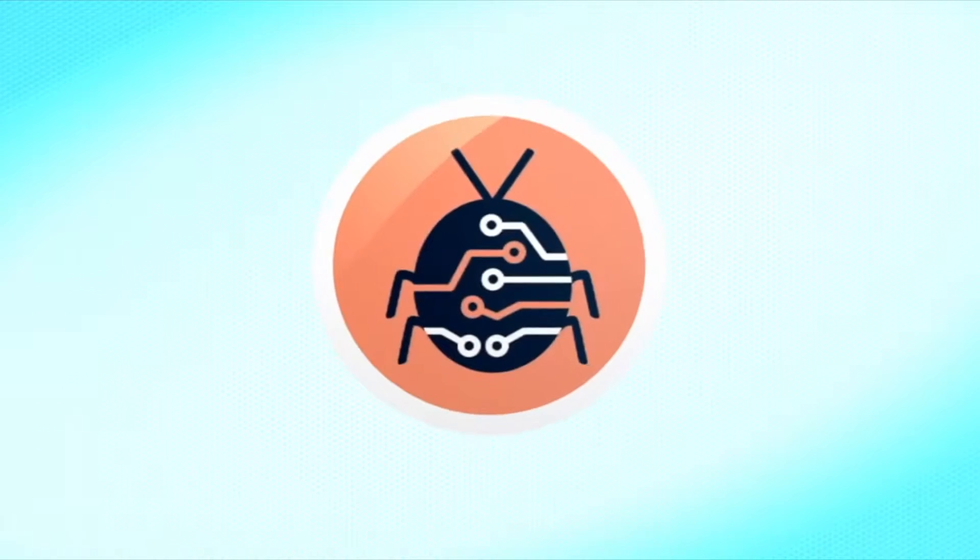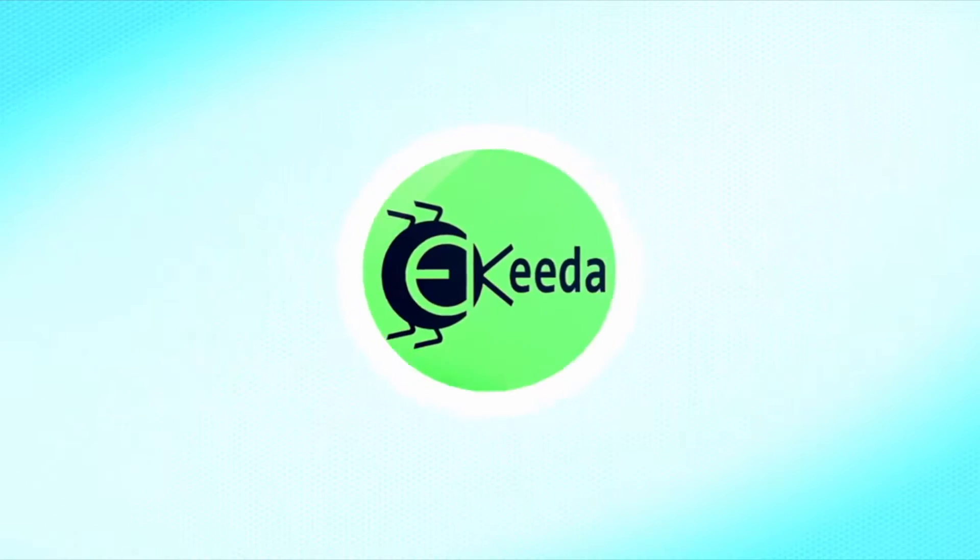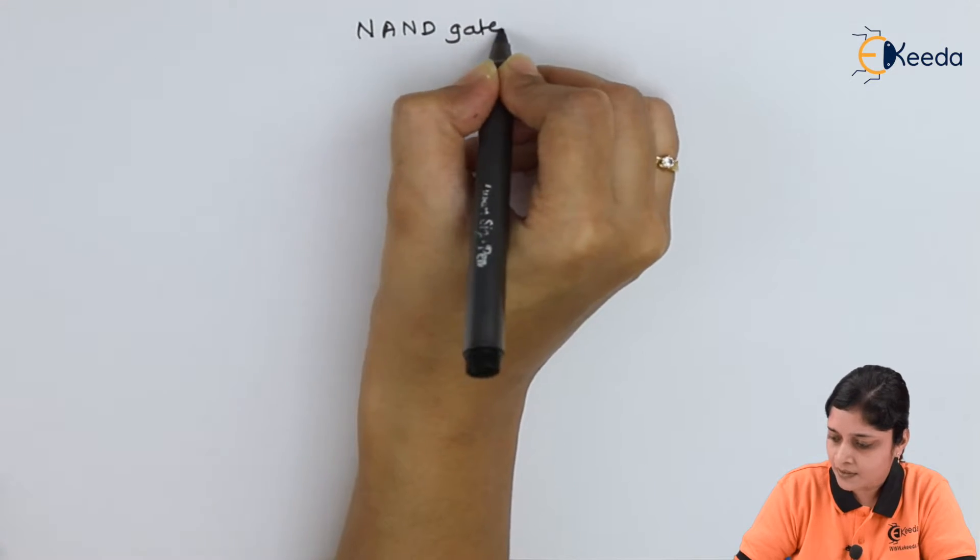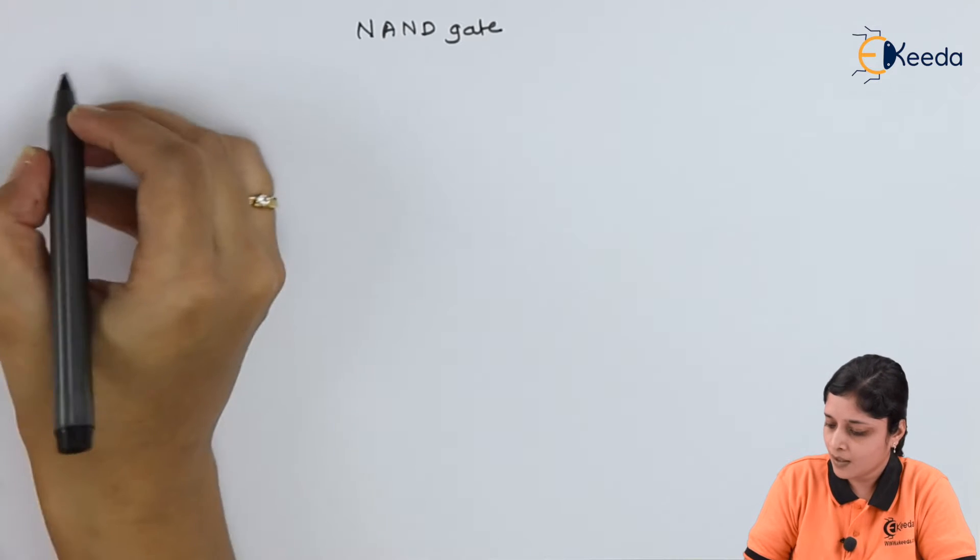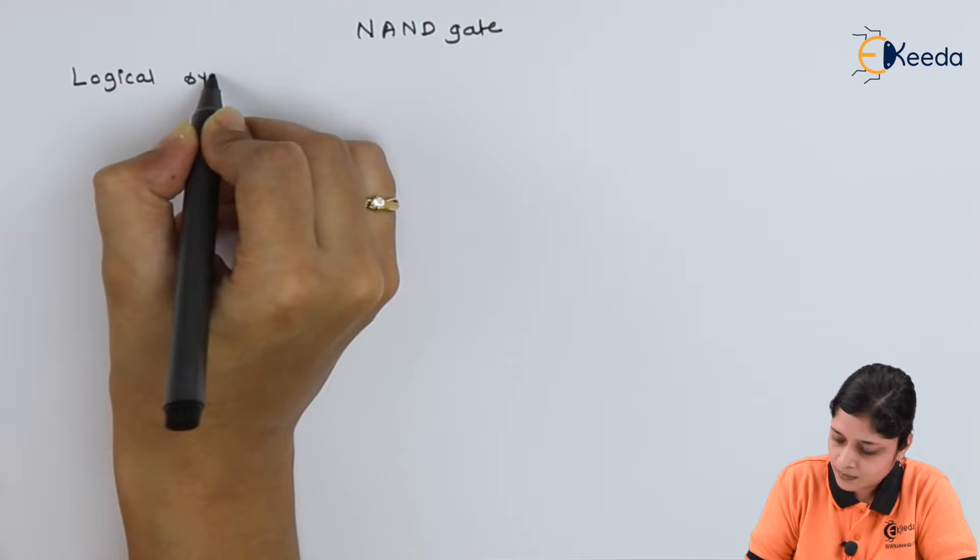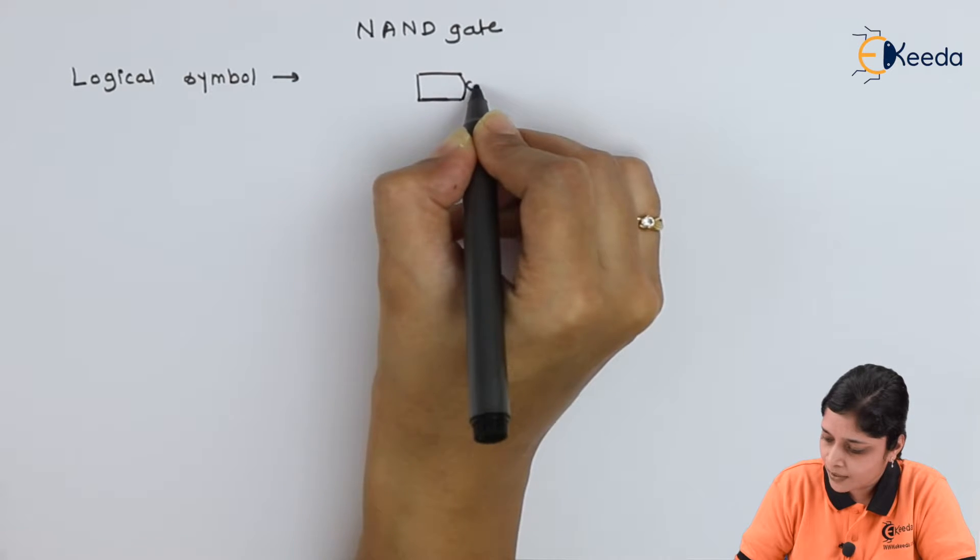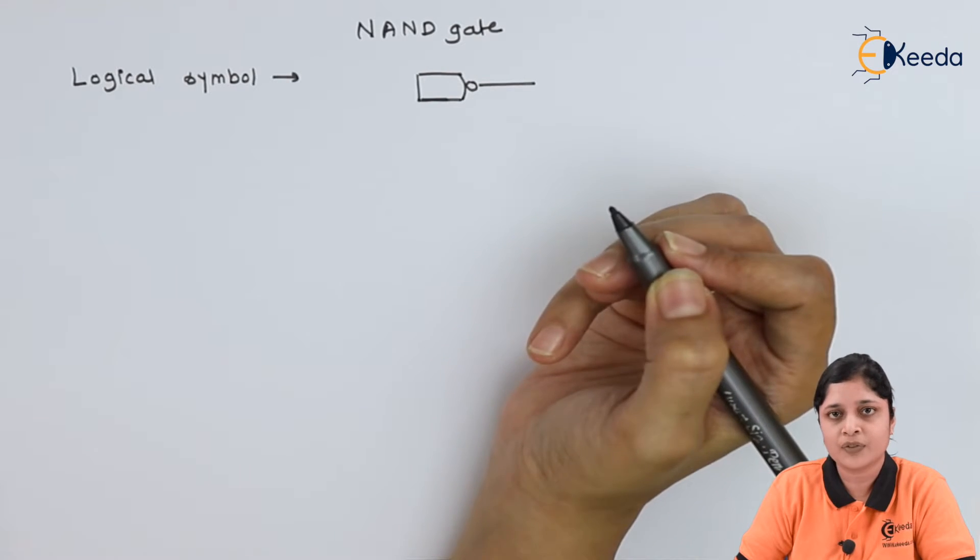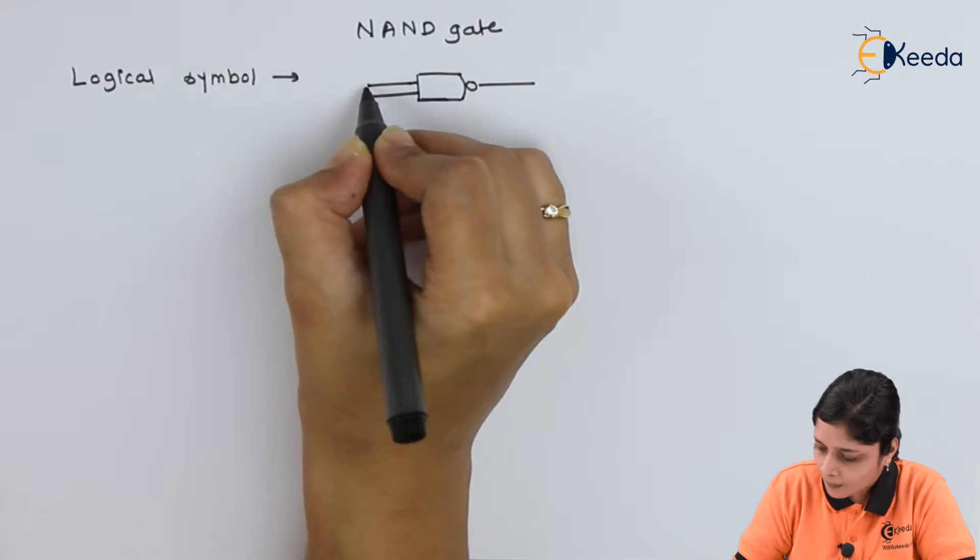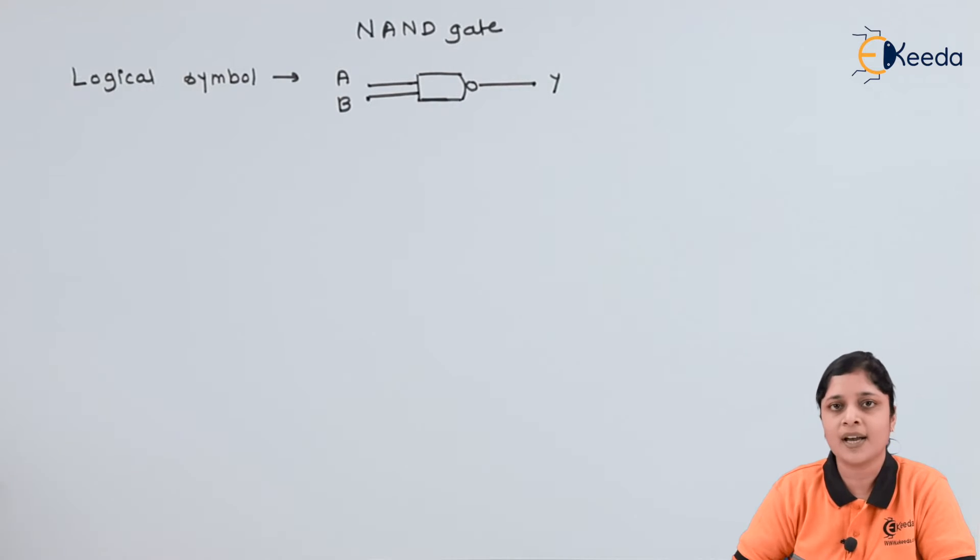Heading is NAND gate. We are going to see its logical symbol. We have to draw AND gate and we have to add bubble after its output. So two inputs are there A and B and output Y is there.